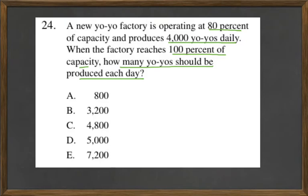This is solved well with setting up a proportion. We know that 4,000 yo-yos at 80%. We know that we want 100%.